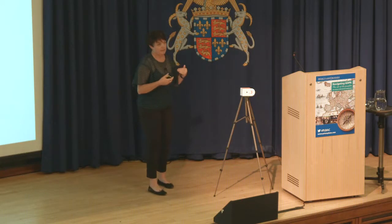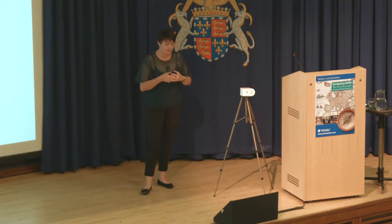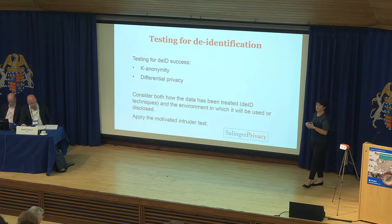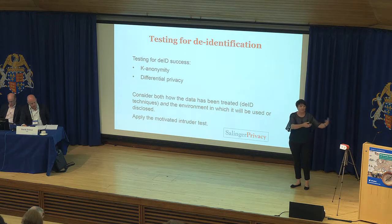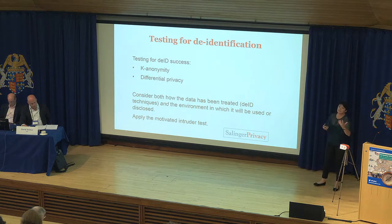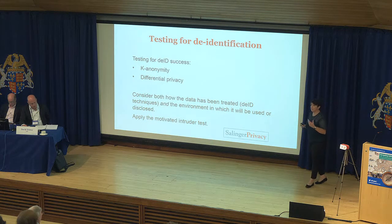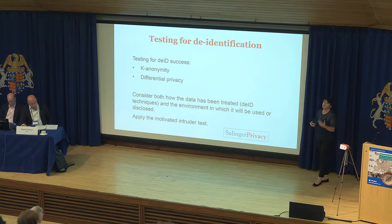Increasingly, regulators are saying you need to consider both how the data itself has been treated — what you've done to it in terms of de-identification technique — but also the environment in which it's going to be used or disclosed. Is it open data release? Is it going to sit in a secure lab with access only by three different approved researchers who have technical, legal, and administrative controls over them? Regulators — and I'm talking here about both the ICO here in the UK and the Australian Privacy Commissioner — also say you need to apply the motivated intruder test.